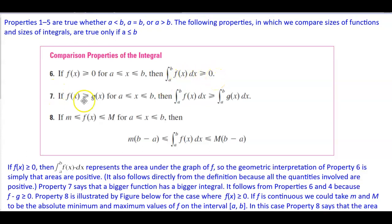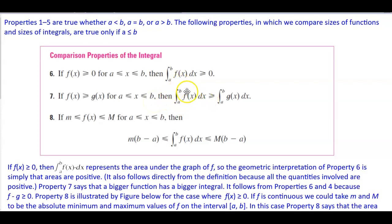Property 7: if f(x) is greater than or equal to g(x) for x in between a and b inclusive, then the integral of f(x) dx from a to b is going to be greater than or equal to the integral of g(x) dx from a to b.